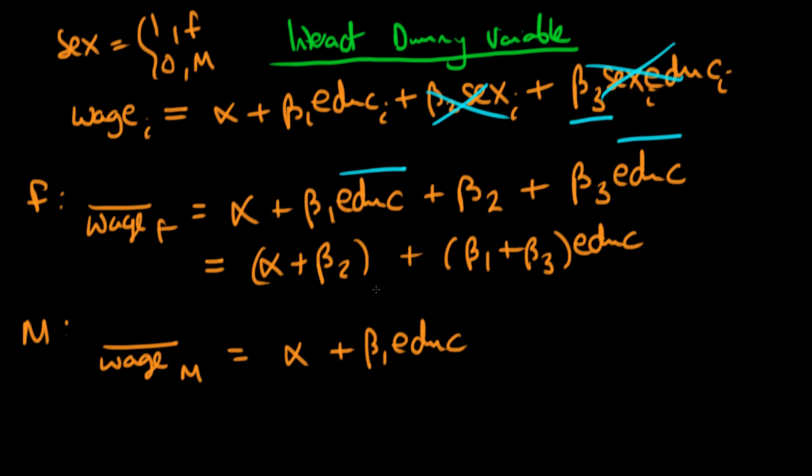So now we can think about what the effect of our sex variable has been on our specification and our interpretation. So what does beta two represent here? Well, beta two represents the additional premium which females would have over males if they had zero years worth of education, because if they had zero years of education, then both of these two terms would disappear, and the only difference between males and females would in fact be our beta two.